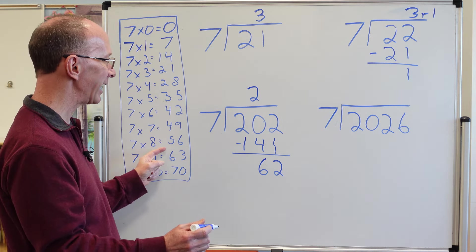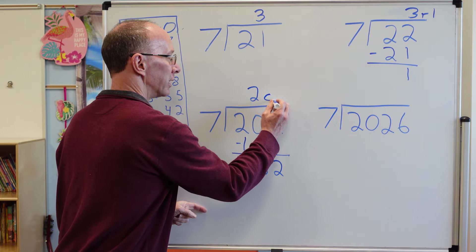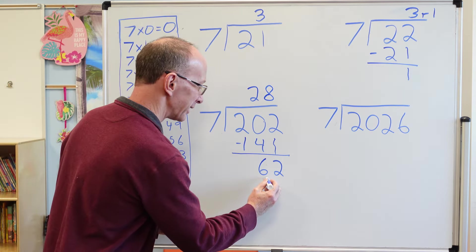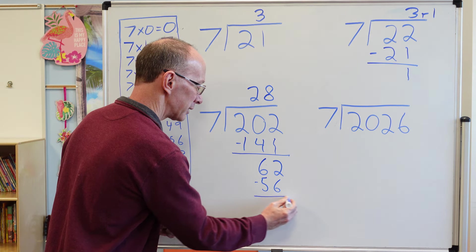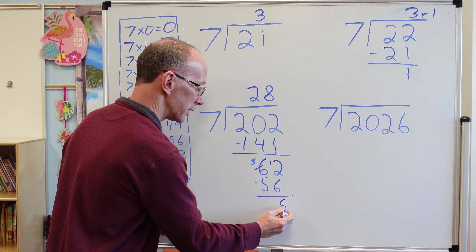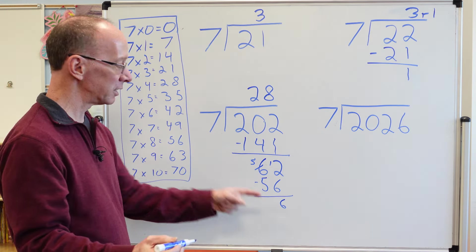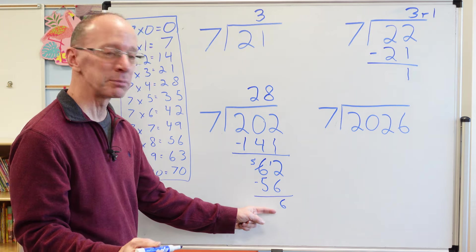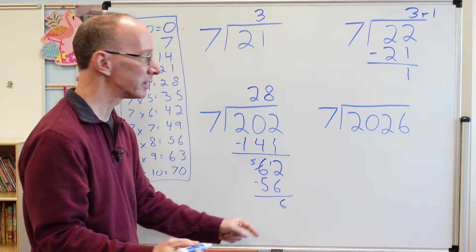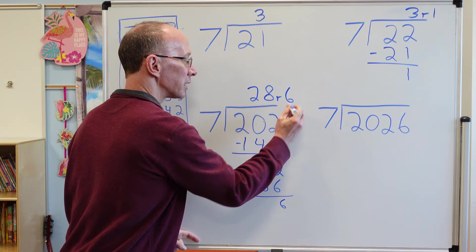We got to use seven times eight. So I'm going to put eight right here. Eight times seven, 56. Right here. 56. Subtract. Got to borrow a little bit. 12 minus six. Six. Can I put seven into six? Can't do it. That is my remainder. No other number to drop down. So we're going to put remainder six.